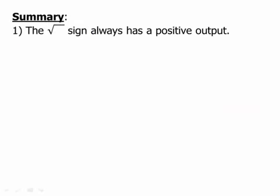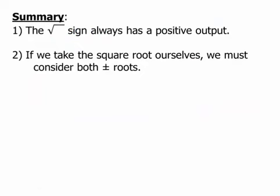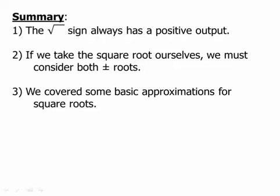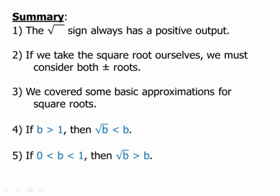In summary: the radical sign always has a positive output. If we take the square root ourselves, we must consider both positive and negative roots. We covered some basic approximations for square roots. If the base is greater than 1, taking a square root makes things smaller — square root of b is less than b. If the base is between 0 and 1, taking the square root makes things bigger — radical b is greater than b.